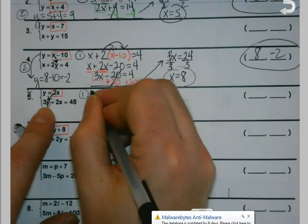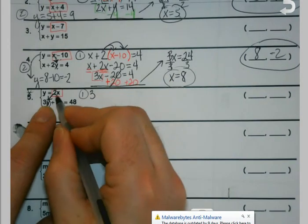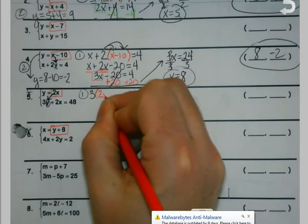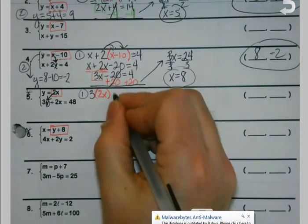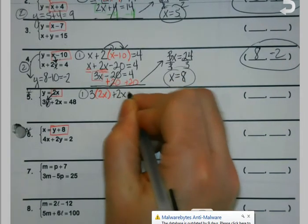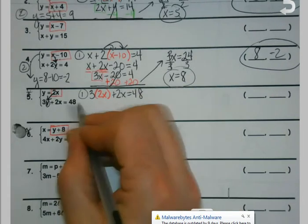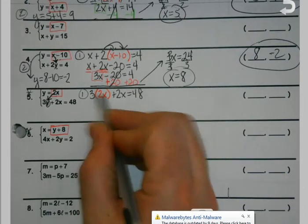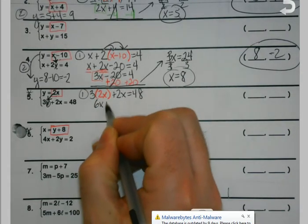So step 1. I've got 3, but y is what's in my box. So that's 2x plus 2x equals 48. Because I still copy the rest of the problem. The only thing that's changing is that y. So 3 times 2 would be 6x.